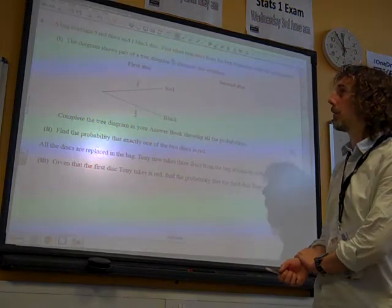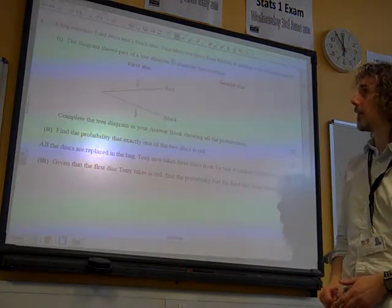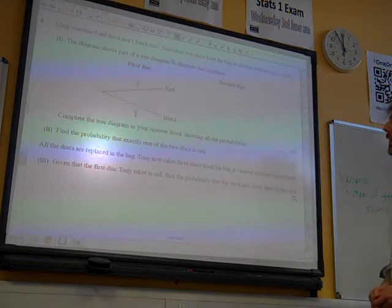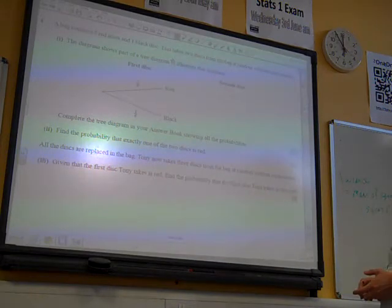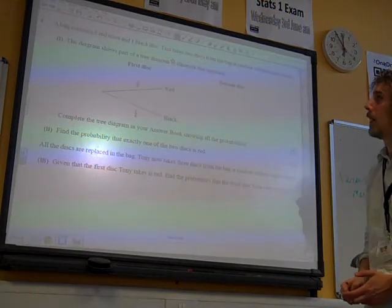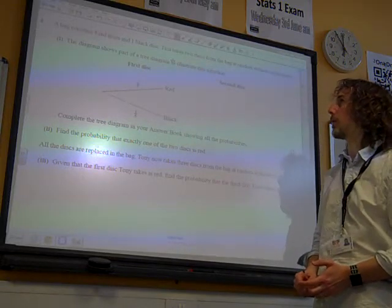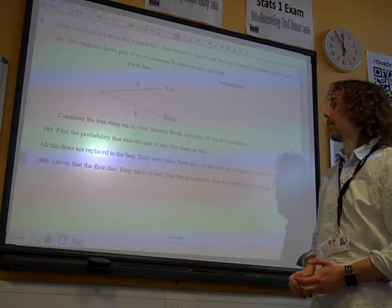Brilliant. Right, question four. A bag contains five red discs and one black disc. Tina takes two discs from the bag at random without replacement. The diagram shows part of the tree diagram to illustrate the situation. Complete it in your answer book.